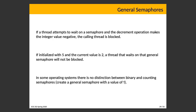The semaphore can have a very high positive value as well. A value of 25 means the next 25 times wait is called, no one will get blocked even with no signals in between. In some operating systems there's no distinction between binary and counting semaphores — if you want a value of 1, you just initialize it to 1. In Unix, the semaphore we work with is a general semaphore, and they are always general.